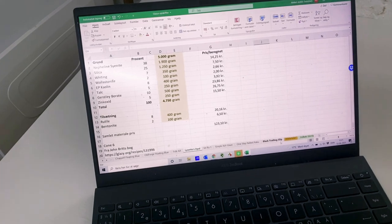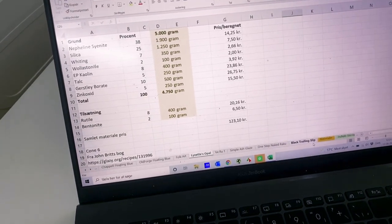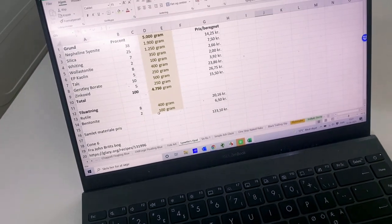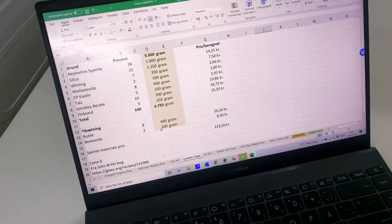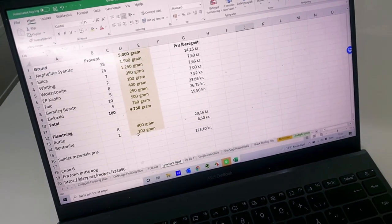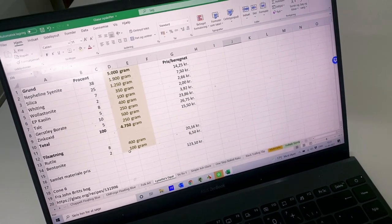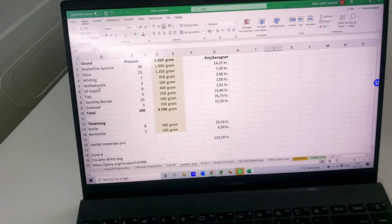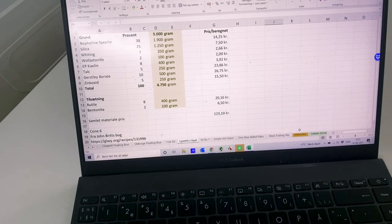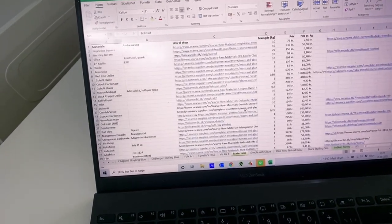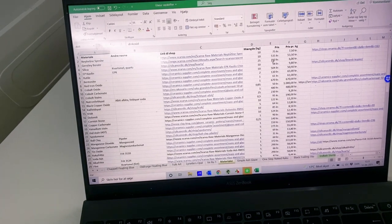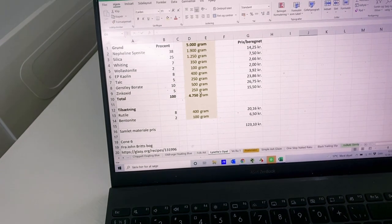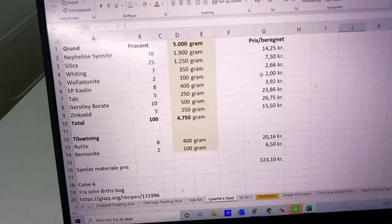I put all my glazes into this spreadsheet. For each glaze I have a tab, and the one we're going to mix today is called Lynette's Opal. It's a very beautiful subtle blue with some breaking of purple and light. It's a very nice cone six glaze. What I also have done is put all my materials, the stuff that I need to buy or have bought, and the suppliers and the price and the amounts that they come in.